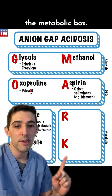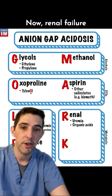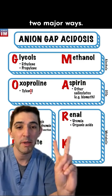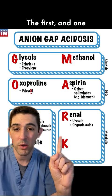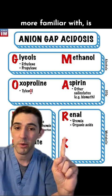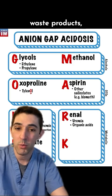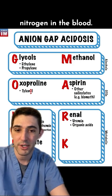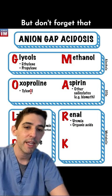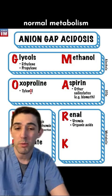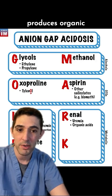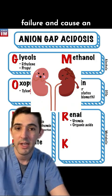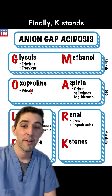R and K are in the metabolic box. Renal failure can cause an anion gap acidosis in two major ways. The first, which you may be more familiar with, is a buildup of nitrogen waste products like blood urea nitrogen in the blood. But don't forget that normal metabolism produces organic acids, which can also build up in renal failure and cause an anion gap acidosis.